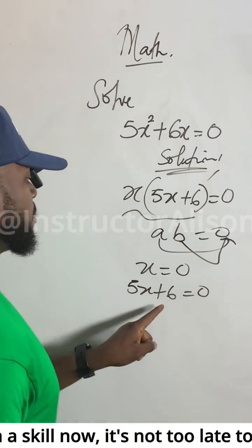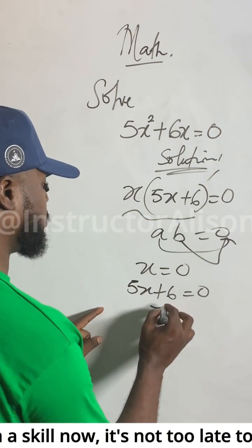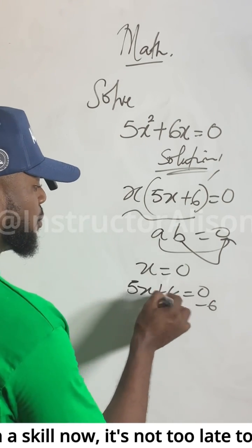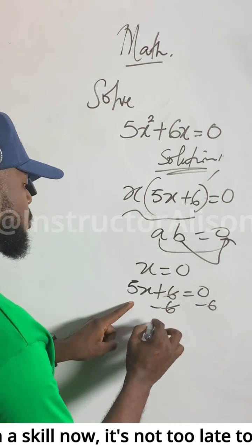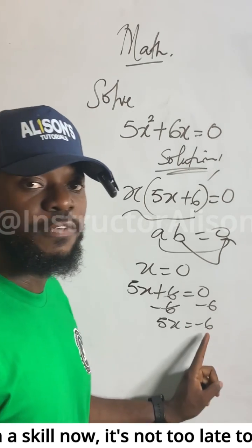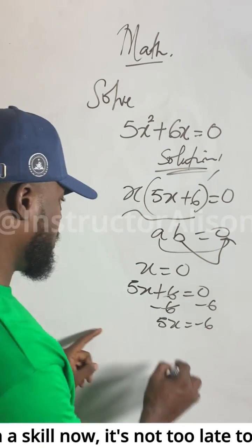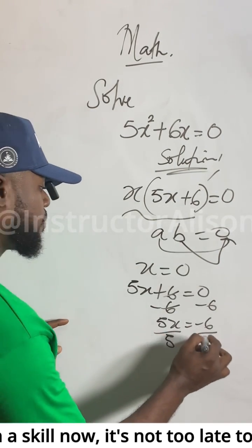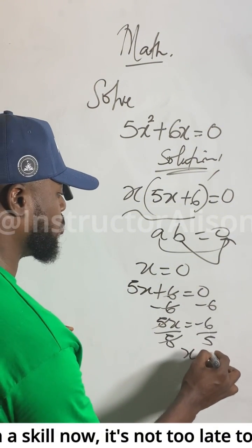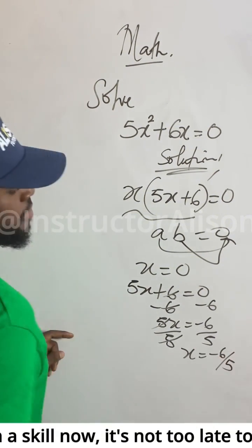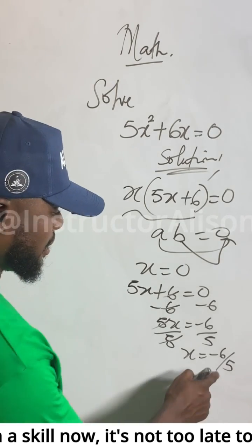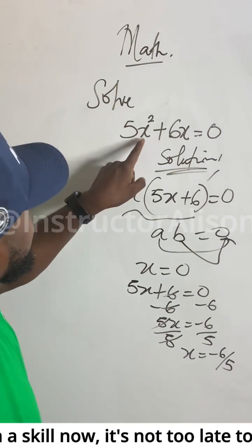The second one: 5x plus 6 equal to zero. I want 5x, so I subtract six from both sides — this and this will cancel to zero — so 5x equals minus six. Divide both sides by five, so x equals minus six over five. That is another possible value of x.